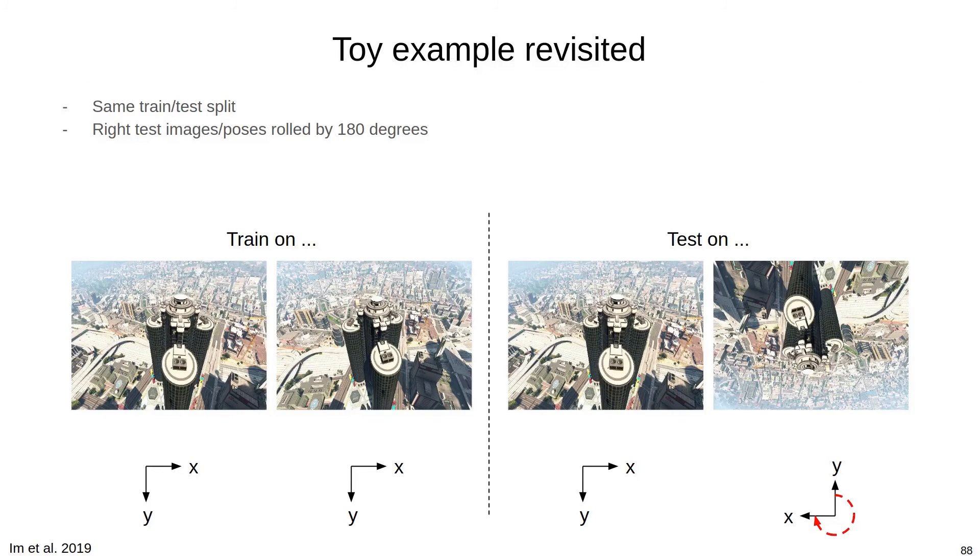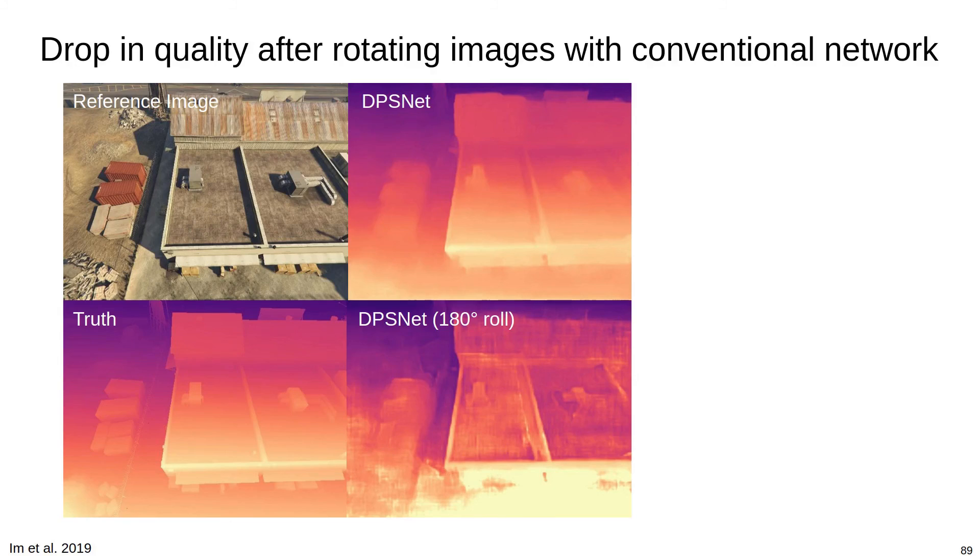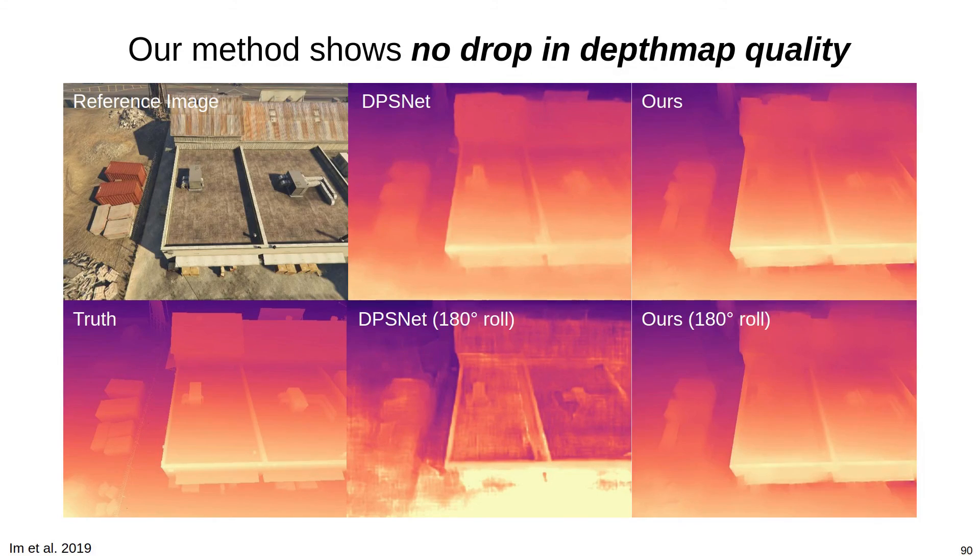We also show the benefit of viewpoint compensation. We previously showed how a conventional network like DPSNet suffers a steep drop in depth map quality by rotating images in the test set. Here we can see how DPSNet struggles with the rotated images. Our method, however, exhibits no drop in quality after rotating the images due to the viewpoint compensation in our feature network.